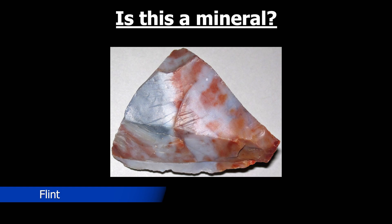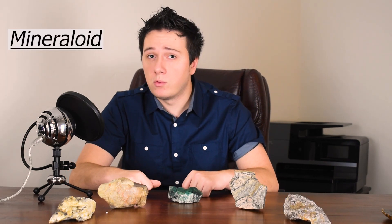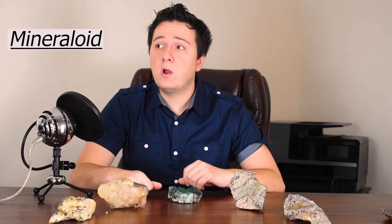What about flint? Could this be considered a mineral? Surprisingly, flint is not a mineral — it's actually considered a mineraloid. A mineraloid is something that is almost a mineral but lacks one of the parameters. In this case, it lacks an orderly internal structure. It fits the other five parameters, but is still not considered a mineral.